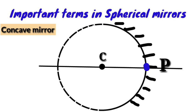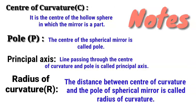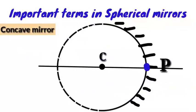What is the distance between the pole and the center of curvature? The distance between the center of curvature C and the pole of the spherical mirror is called the radius of curvature. The distance C to P is the radius of curvature.